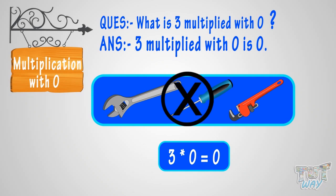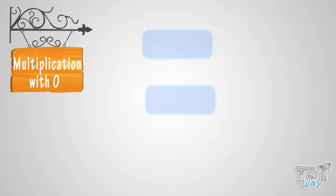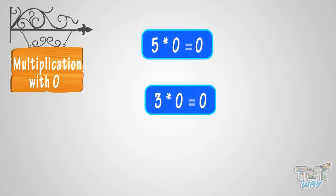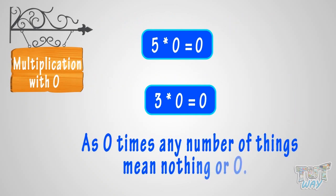So, what have we learnt? We have learnt that anything multiplied with zero is zero, as zero times any number of things means nothing, or zero.